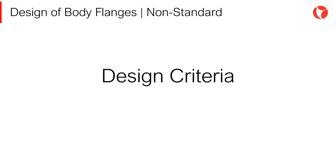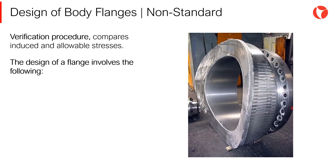Rules for the design of bolted flange connections, as described in Appendix 2, apply to flanges with gaskets placed entirely within the circle enclosed by the bolt holes and with no contact outside the circle. The procedure indicated in Appendix 2 is a verification method: flange materials and dimensions are defined, and the verification procedure compares the induced stresses in the flange with respect to the allowable stresses.